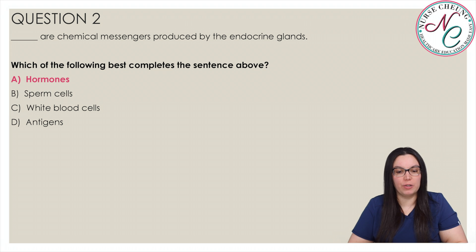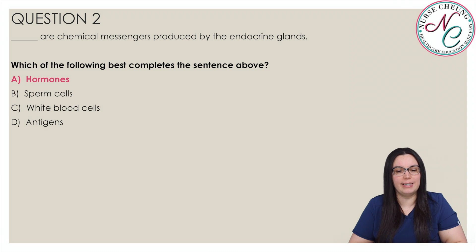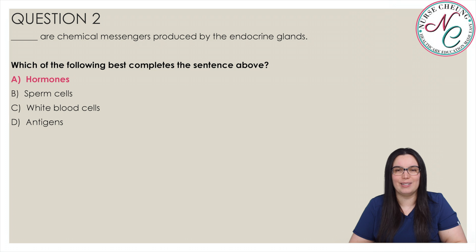Hormones are the chemical messengers produced by the endocrine glands and are used to regulate many bodily activities. Sperm is produced by the testes for reproduction. White blood cells are used to protect the body against pathogens, and antigens are foreign cells recognized by the immune system.